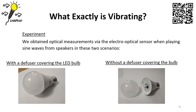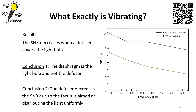To determine what exactly is vibrating, we obtained optical measurements via the electro-optical sensor when playing sine waves in two scenarios: with a diffuser covering the LED bulb, and without. The SNR decreases when a diffuser covers the light bulb. Our first conclusion is that the diaphragm is the light bulb itself, not the diffuser — the light bulb is the object vibrating. The second conclusion is that the diffuser decreases the signal-to-noise ratio because it distributes light uniformly.